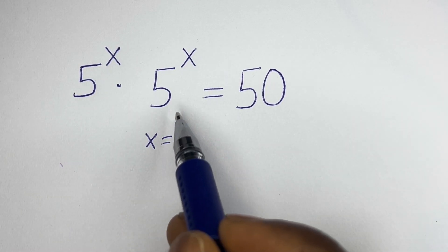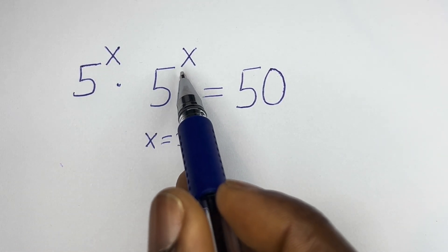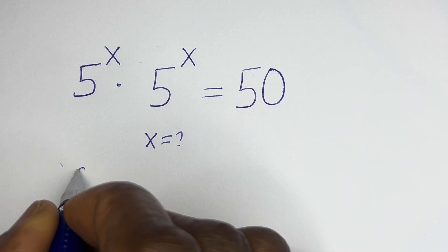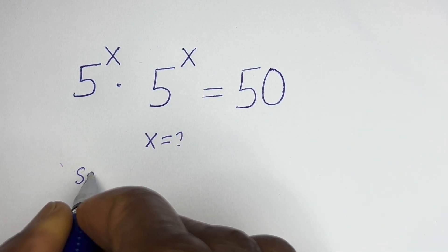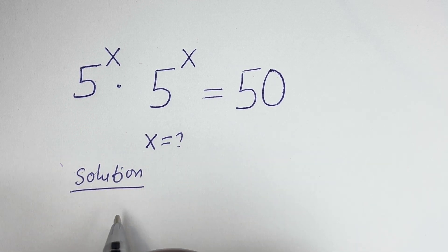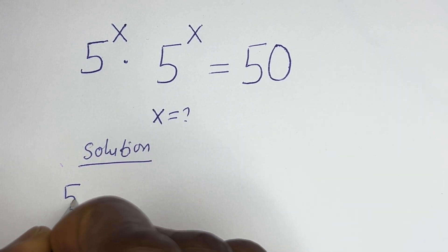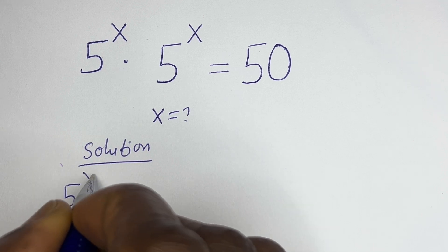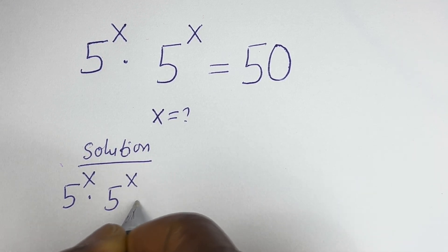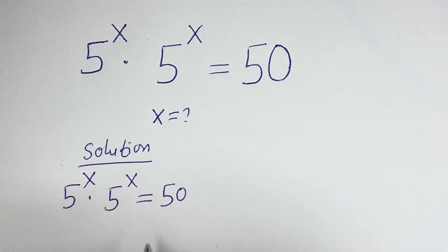Hello. How to solve for s in this equation: 5 to the power of s multiplied by 5 to the power of s is equal to 50. We have 5 to the power of s multiplied by 5 to the power of s is equal to 50.